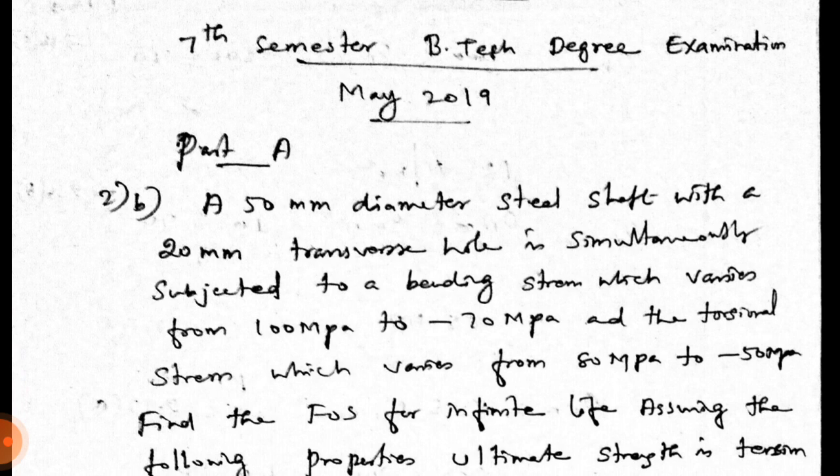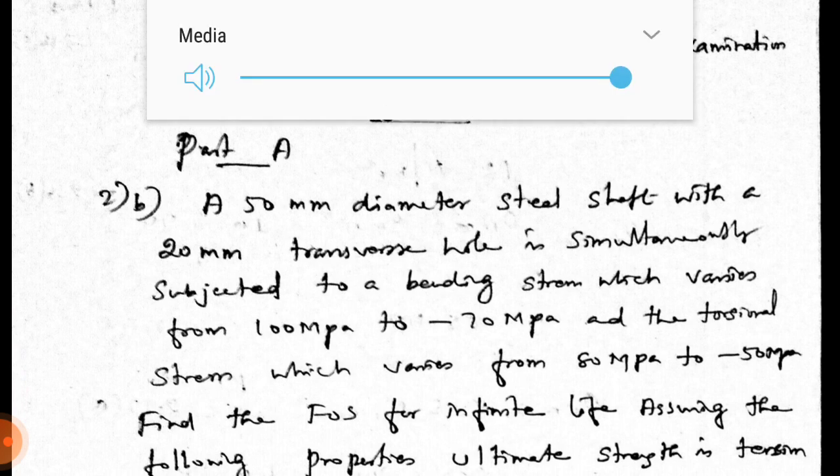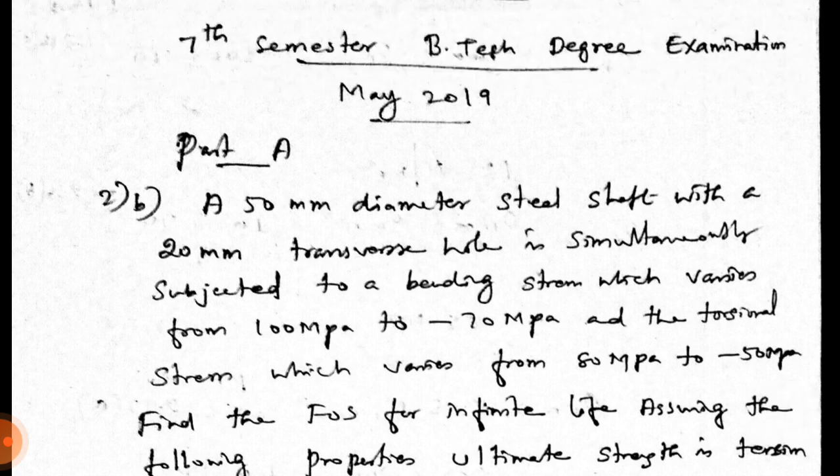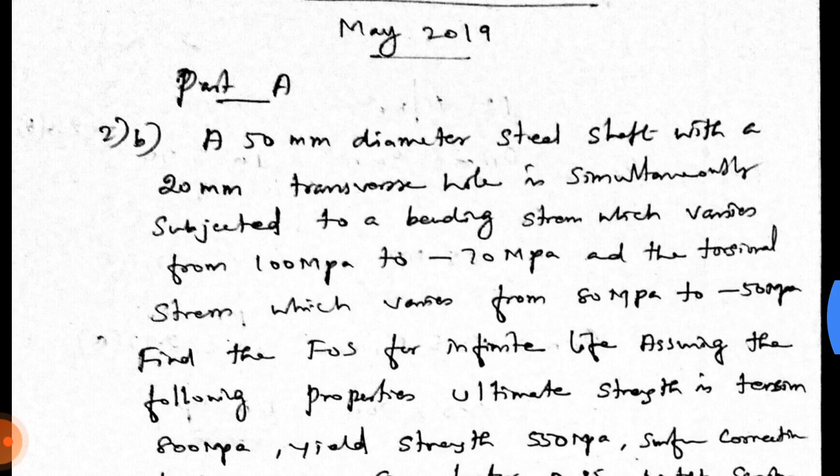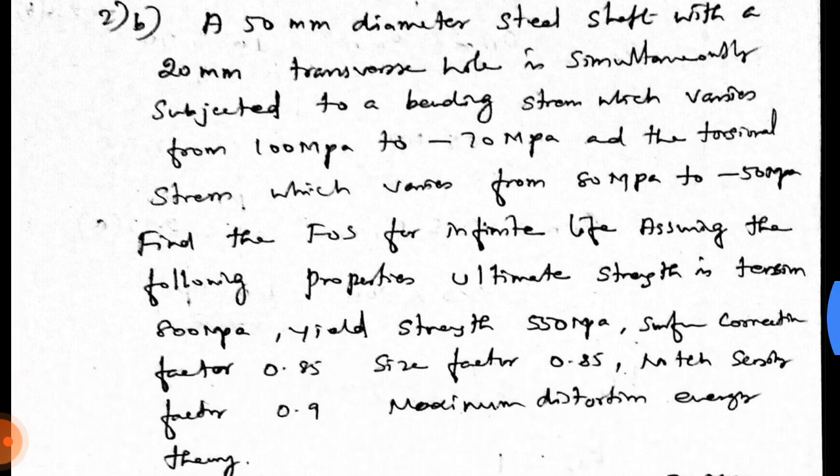A 50 mm diameter steel shaft with a 20 mm transverse hole is simultaneously subjected to a bending stress which varies from 100 MPa to minus 70 MPa and the torsional stress which varies from 80 MPa to minus 50 MPa. Find the factor of safety for infinite life.